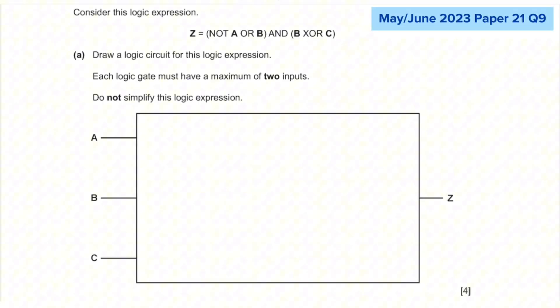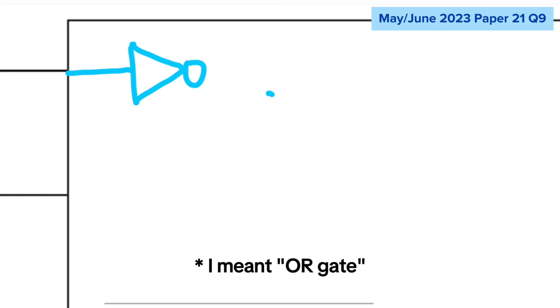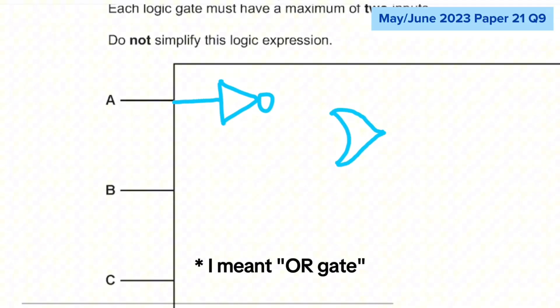Next we'll look at how to create a logic circuit from an expression. So basically, it's like the reverse of what we did just now. So they gave us Z equals (NOT A OR B) AND (B XOR C). So you have to do the ones in the brackets first. So let's start with NOT A OR B. First, I'll draw a NOT gate with A as an input. And then next, we need an AND gate that has NOT A and B as inputs, like this.